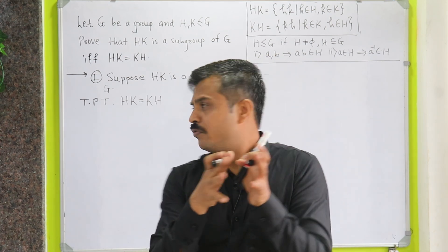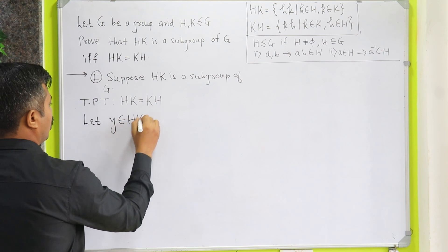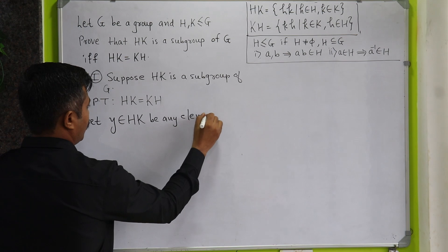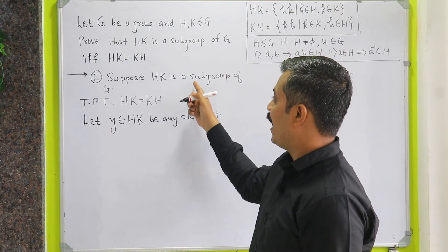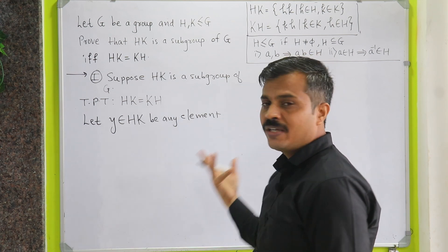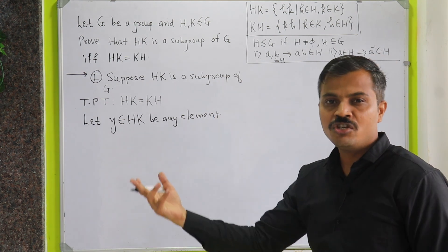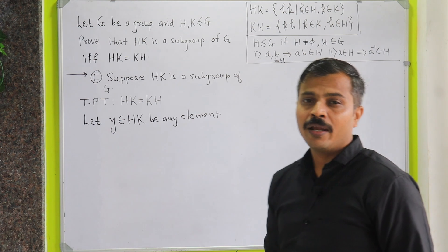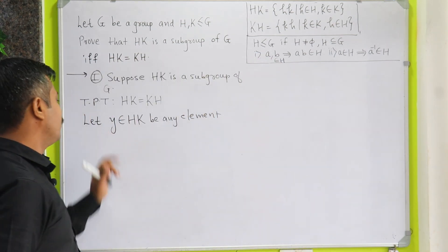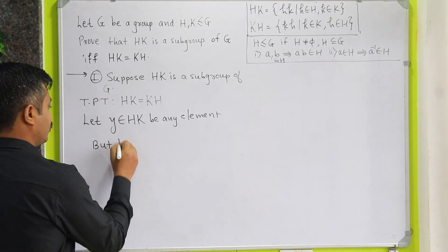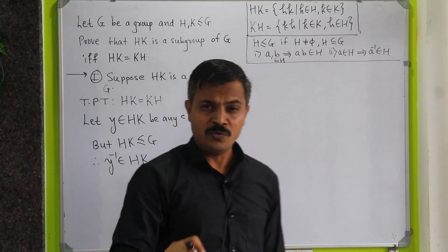Let Y belong to HK be any element. Since HK is a subgroup of G, by the two-step subgroup test, if we take any element A from HK then A inverse will also lie in HK. So, since Y is a member of HK and HK is a subgroup of G, therefore Y inverse will also lie in HK.